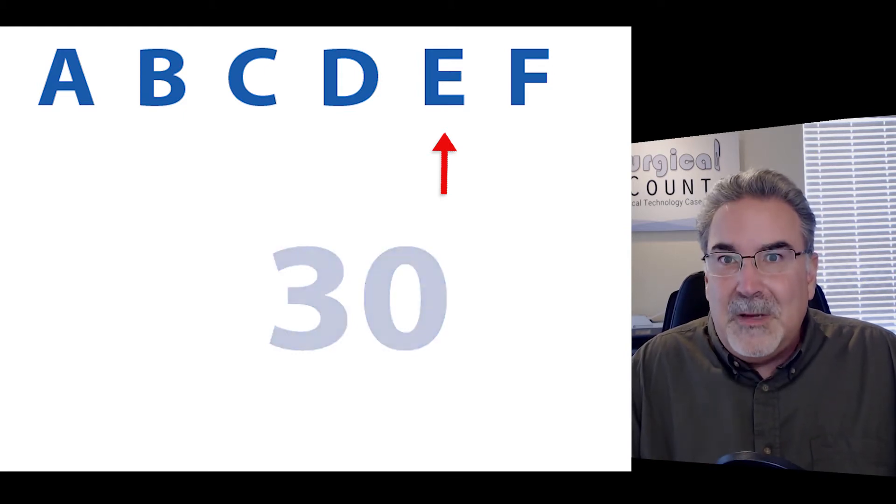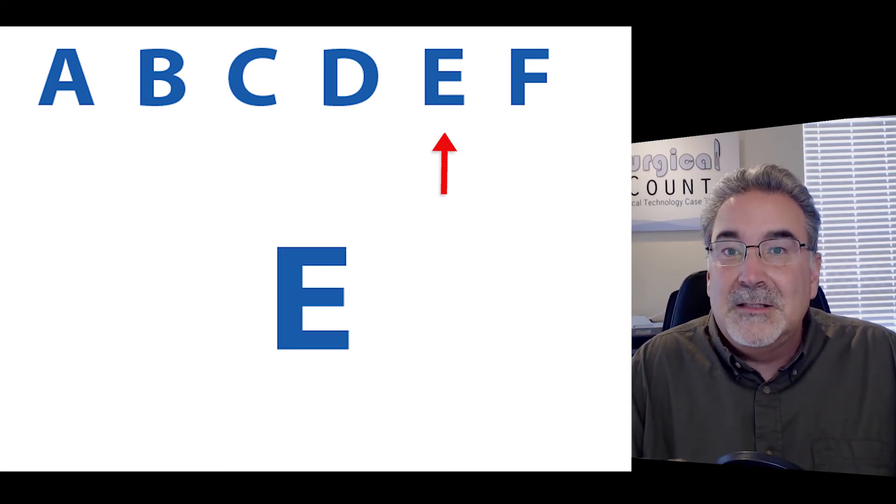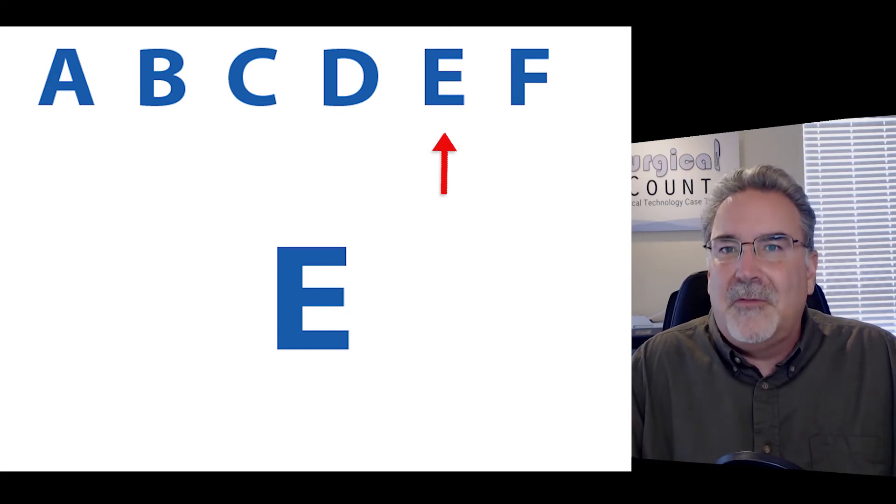Now, if you don't like flipping the letter E, just count the number of horizontal lines that are in the letter E. There's 3 of them. And again, 3 should remind you of 30.